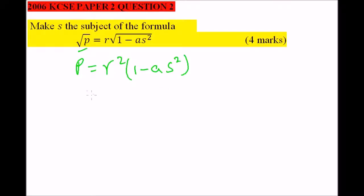We can open the bracket so that we have p equals r squared, that is we multiply by 1, minus ar squared s squared. We take ar squared s squared to the left side and p to the other side, so we have ar squared s squared equals r squared minus p.